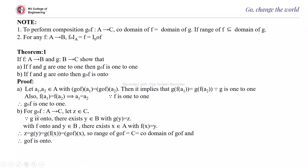For the onto part: let Z belong to C. Since G is onto, there exists Y in B with G(Y) = Z. Since F is onto and Y belongs to B, there exists X in A with F(X) = Y. Therefore Z = G(Y) = G(F(X)) = Gof(X). So the range of Gof equals C, which equals the codomain of Gof, and therefore Gof is onto.